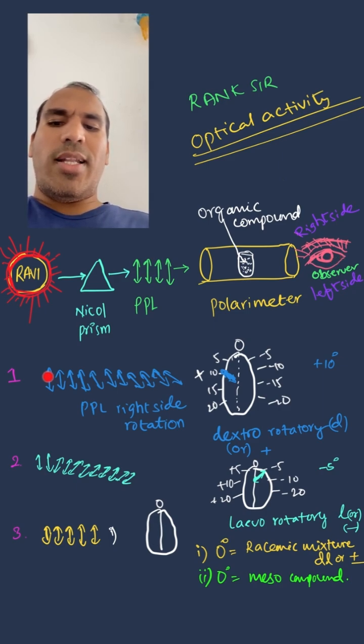In case the light rotates to the right side - from this side, the observer is observing from here - so right side rotation means, for example, plus 10 degrees dextrorotatory (denoted as D, +). And in case it rotates to the left side, then this is called, for example, minus 5 degrees - that is levorotatory.